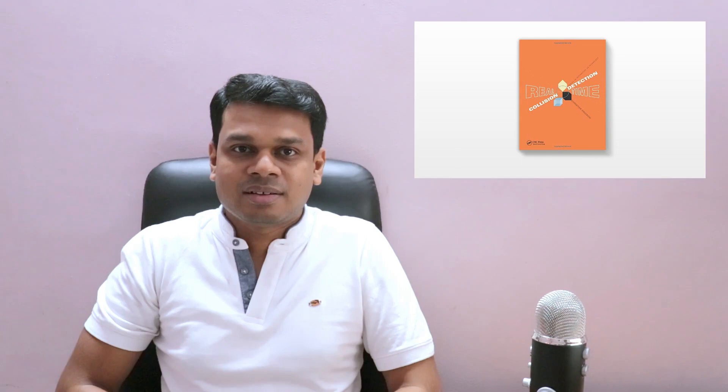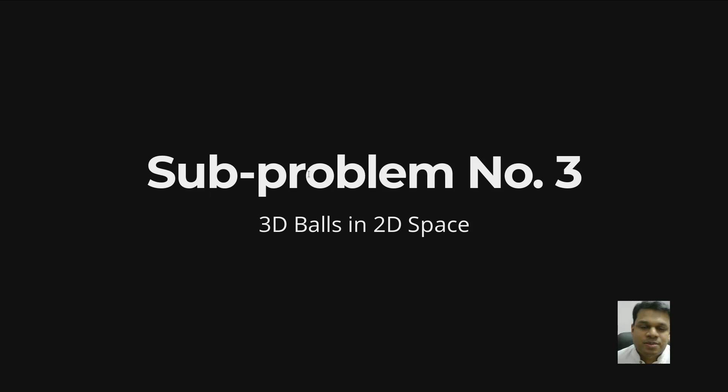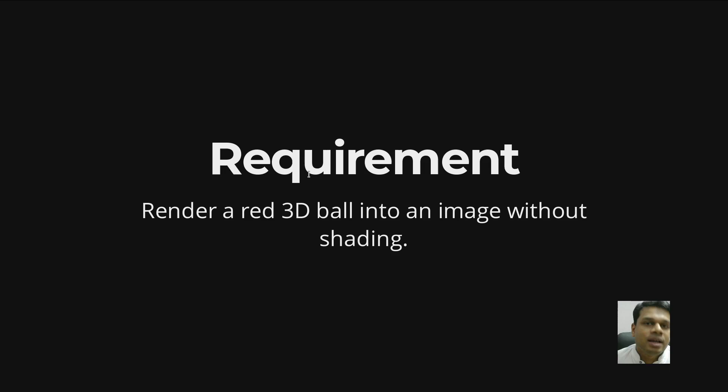So let's start and render some 3D spheres. Let's start with subproblem number three: how to make 3D balls appear in 2D space, or in other words, rendering 3D images. The requirement is to render a 3D red ball into an image without shading. Without shading means it will look flat — it will not have the subtleties that make it look like a 3D ball. It will look more like a red circle in the middle of a black space. But we will get to shading later.